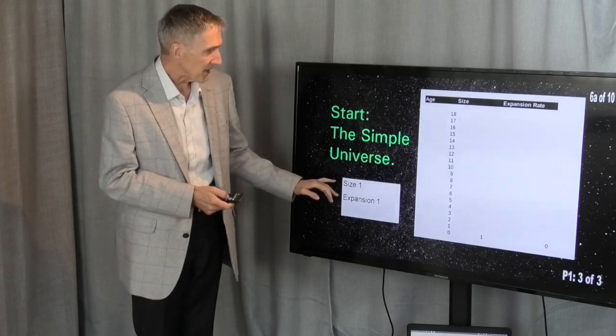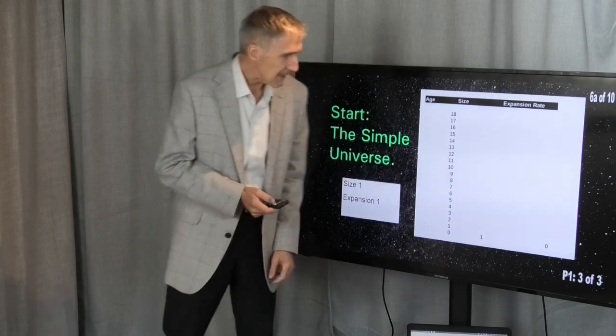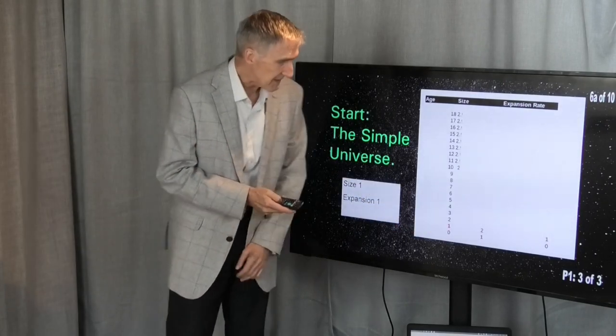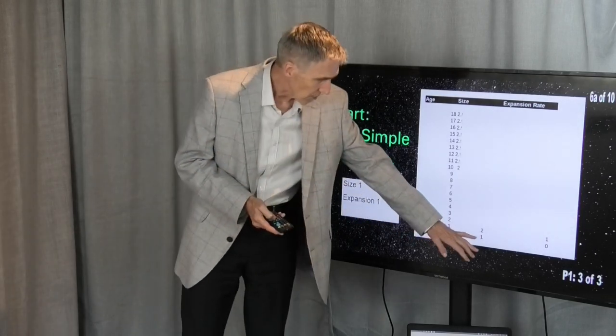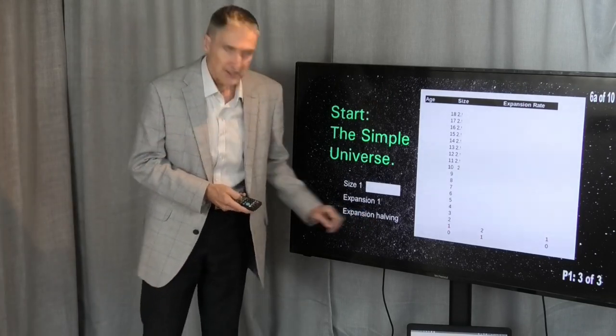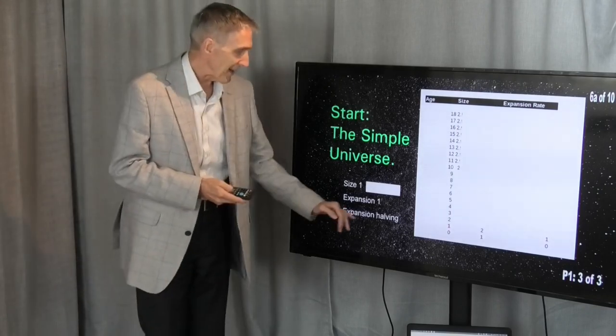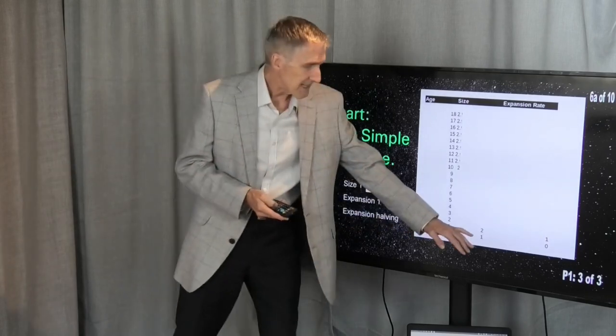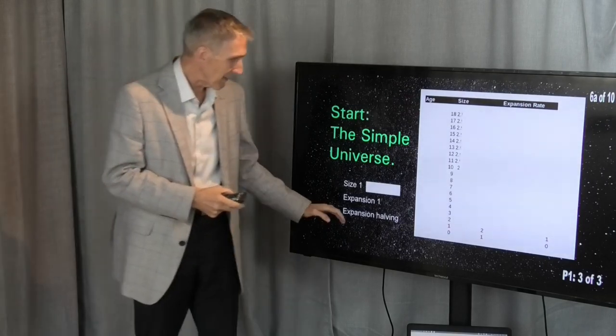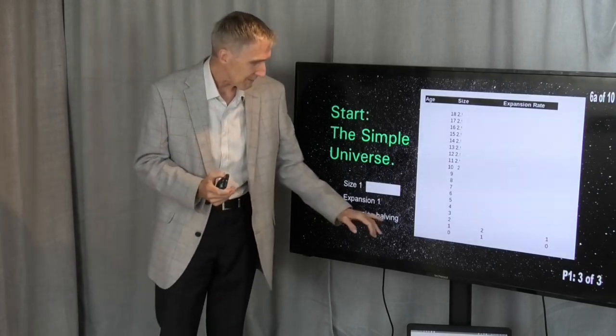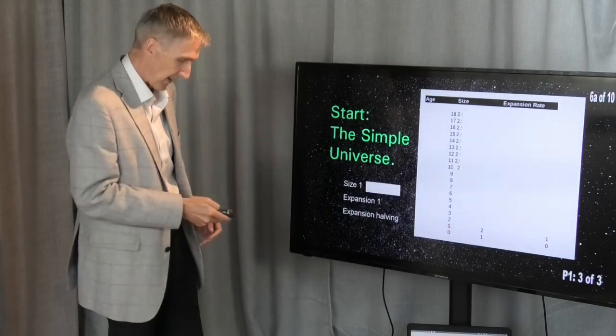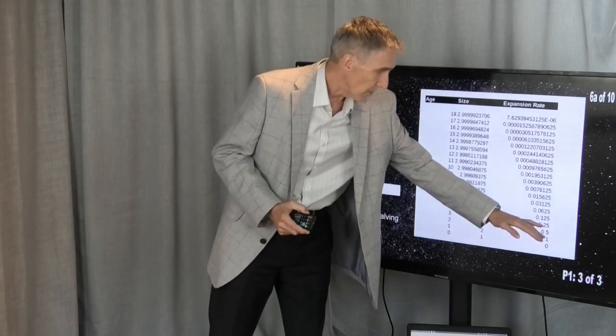So we start off and we assume that the universe was created out of the blue with a size of 1 and an expansion rate of 1. So, after the first period of time, the expansion rate has caused the size of the universe to double. I'm going to make an assumption at this point, which is that the expansion doesn't continue at this rate. So, the expansion starts off at a certain rate, and then it starts reducing. And I'm going to make the simplest possible assumption, which is that the expansion is halving. So, the expansion rate starts off at one, but then it goes to a half, a quarter, an eighth, and so on.